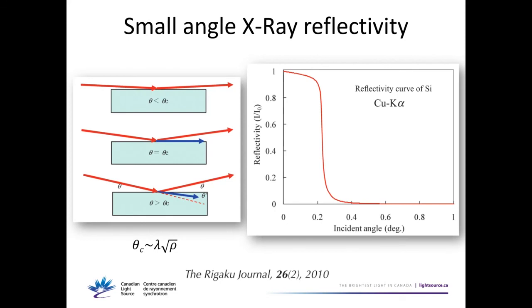What happens when you hit a thin film at grazing angles with X-rays? If it's very grazing, you have total reflection — the beam does not enter the material. At a certain critical angle, the beam travels along the surface. Above the critical angle you have reflection and refraction — a bit of the beam enters the material. This critical angle is related to the density of the material.